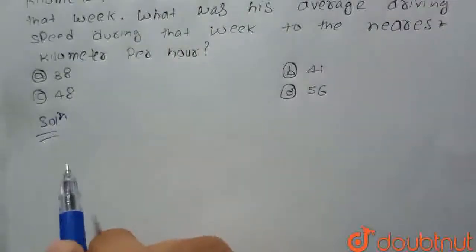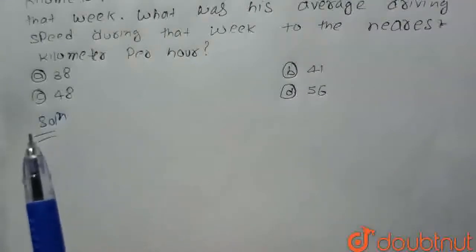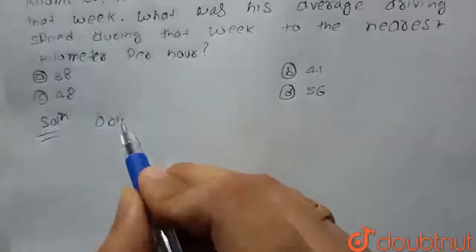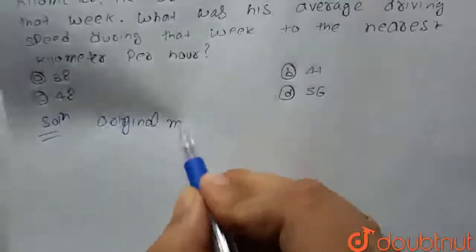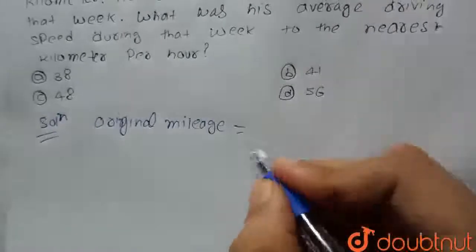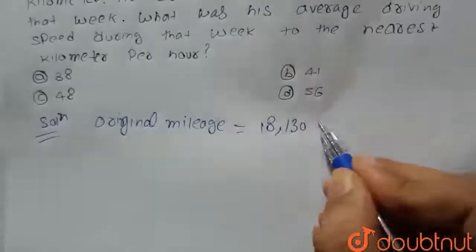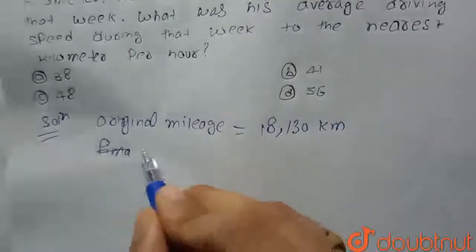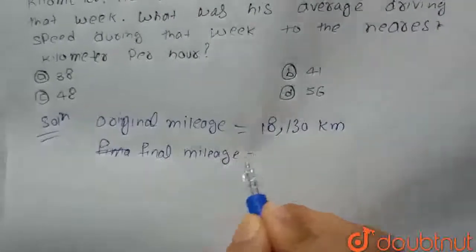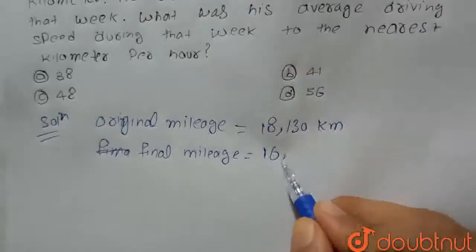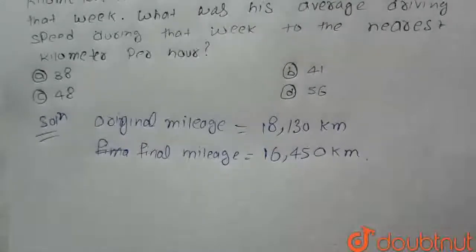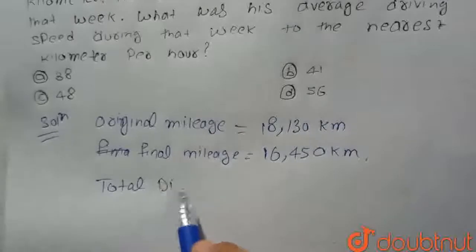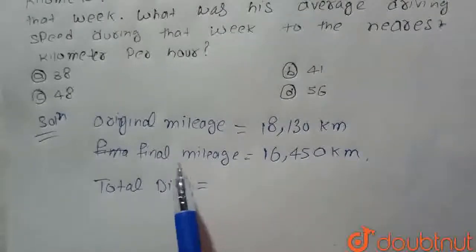Okay, so guys, as you know, we have to find the total distance travelled. So how can we find this? We just subtract the original mileage from the final mileage. So as we have given: original mileage is 18,130 km and final mileage is 16,450 km. We have to find the total distance, which equals original mileage minus final mileage.